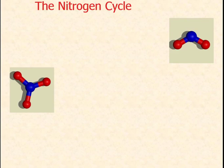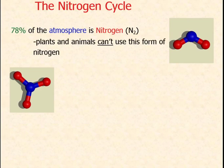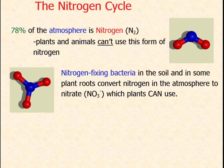The final cycle in this screencast is the nitrogen cycle, by far the hardest of the cycles. 78% of the atmosphere is nitrogen, while oxygen makes up only about 20%. Plants and animals can't use atmospheric nitrogen directly, but we need it for amino acids and DNA. There are tiny bacteria called nitrogen-fixing bacteria that remove nitrogen from the atmosphere and convert it into nitrate, which plants can use.